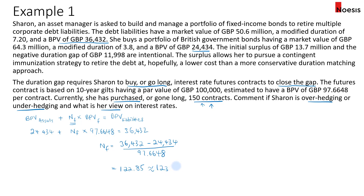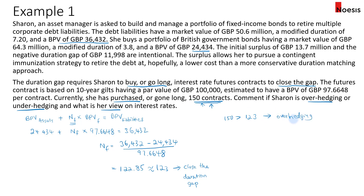This tells us that if Sharon wants to close the gap, she will have to go long 123 contracts to close the duration gap between the assets and the liability. But she has actually gone long 150 contracts — in other words, she has purchased more than what is needed to close the gap. So in this case, she is over-hedging and will have an over-hedged position.